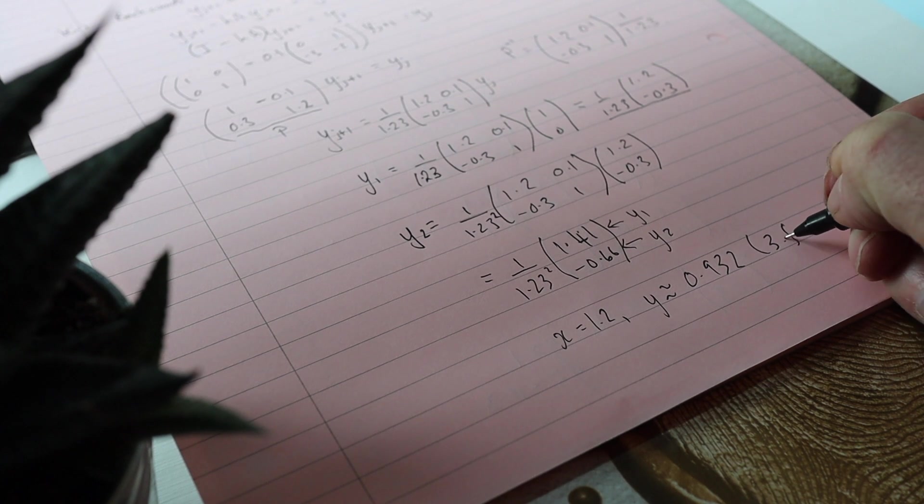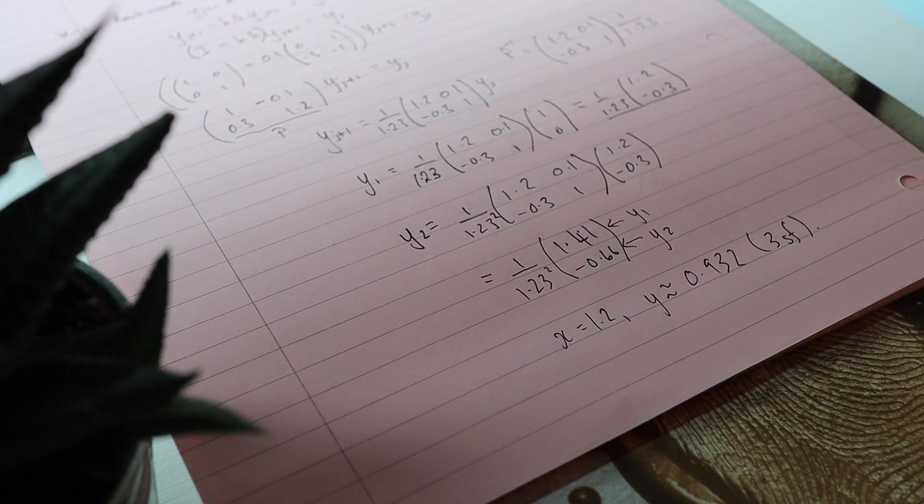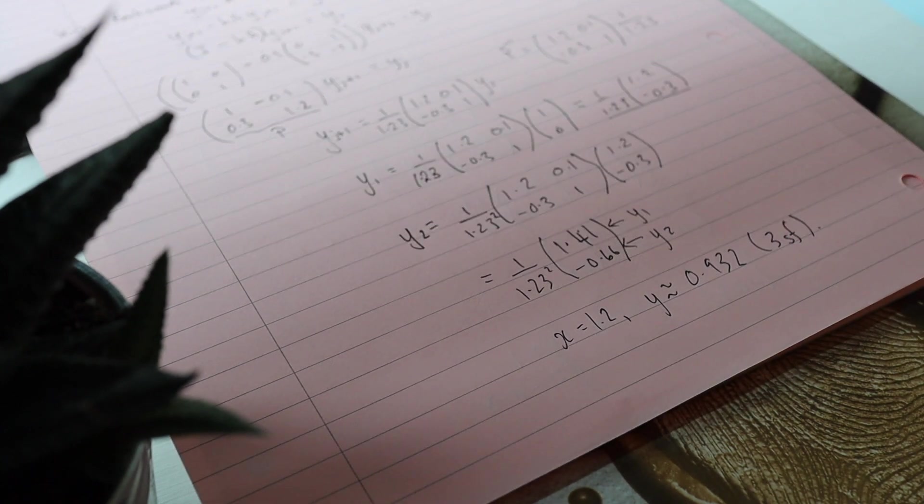Sorry about the handwriting, it's got a bit rough there, but that's how you do question 7 from the 2018 paper.